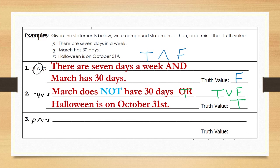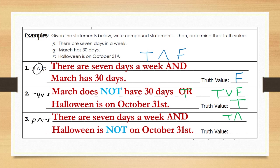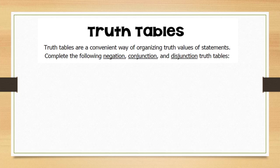Now try number three on your own. Welcome back — statement p, 'there are seven days in a week,' is true, connected with conjunction and, then not r: 'Halloween is not on October 31st,' which is false. When we have true and false, the truth value is false — because with a conjunction, both statements must be true in order for the conjunction to be true.